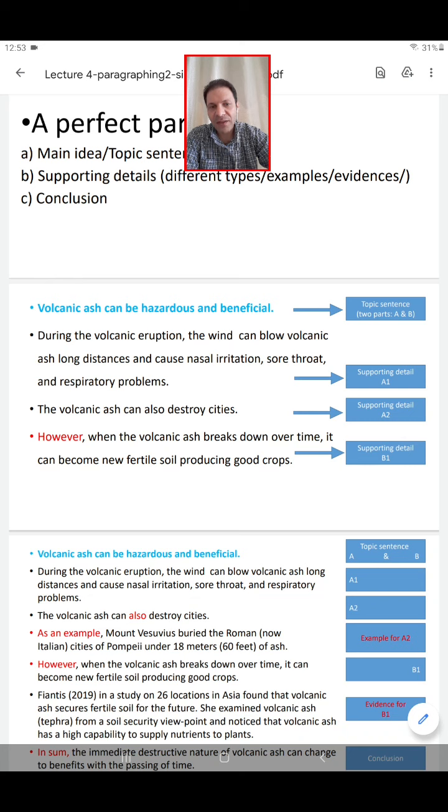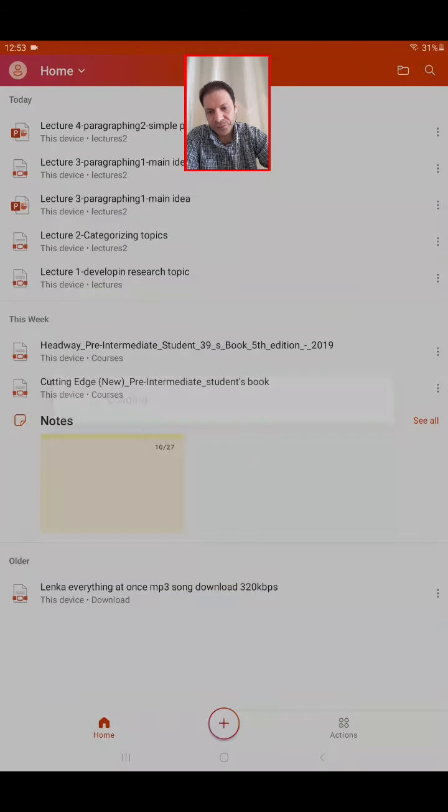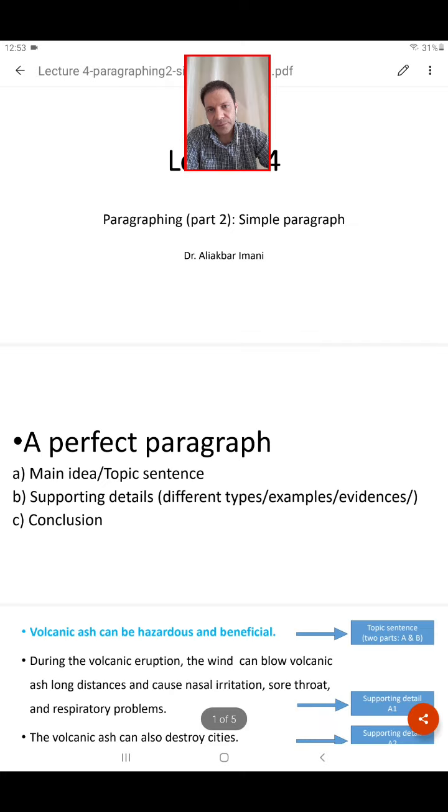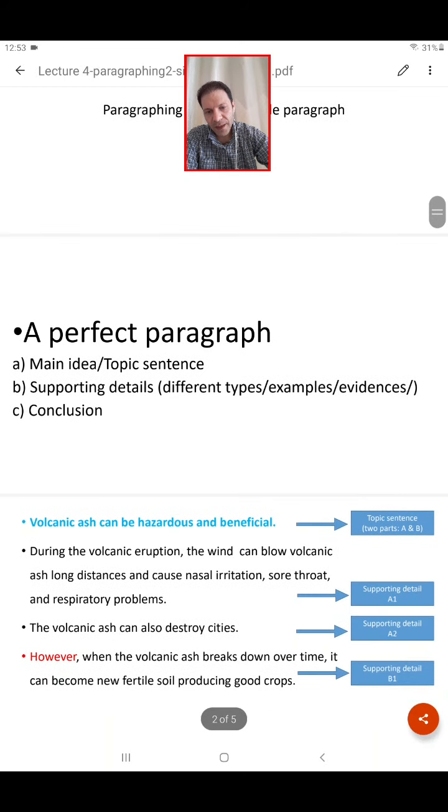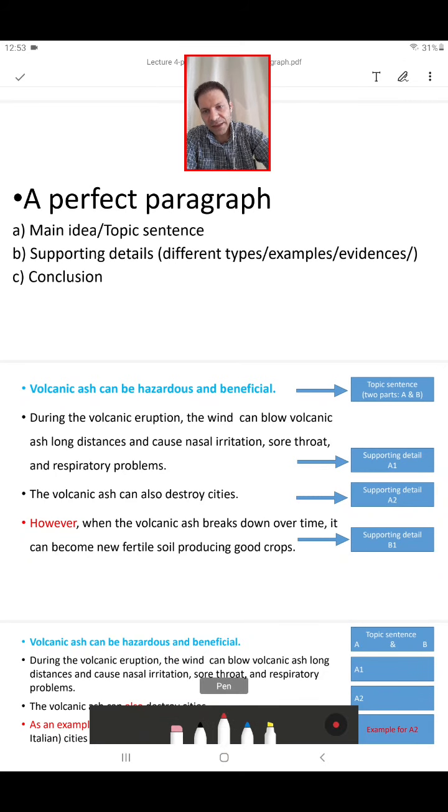During the volcanic eruption, the wind can blow volcanic ash long distances and cause nasal irritation. This is the supporting detail A1, because here we have A and B. Please, everybody, let me go to the editing. As you can see here, volcanic ash can be hazardous, this is A, or beneficial, this is B. A1 is the supporting of the hazard.